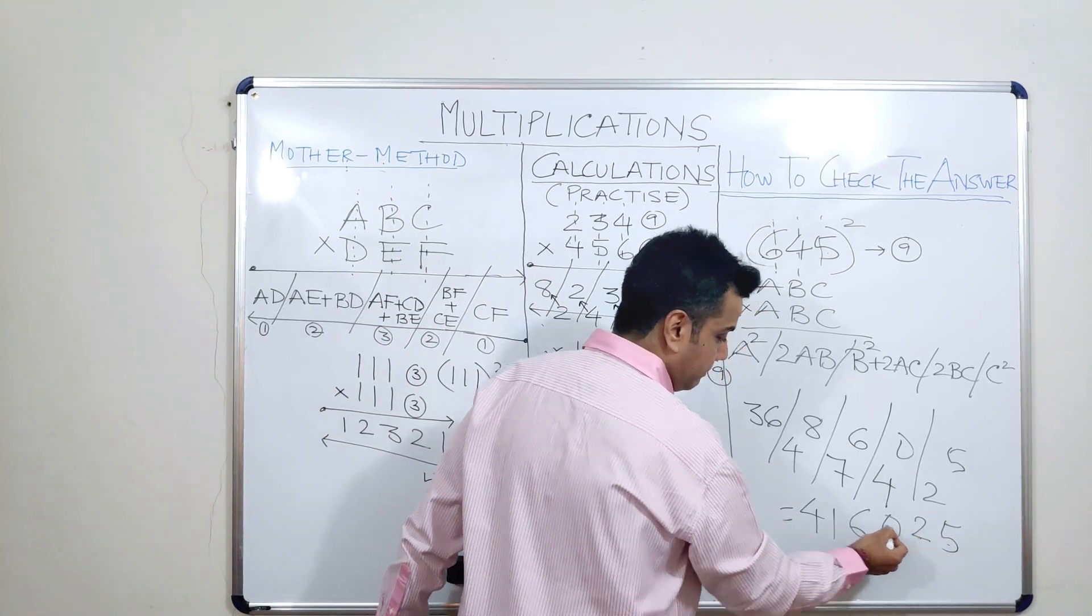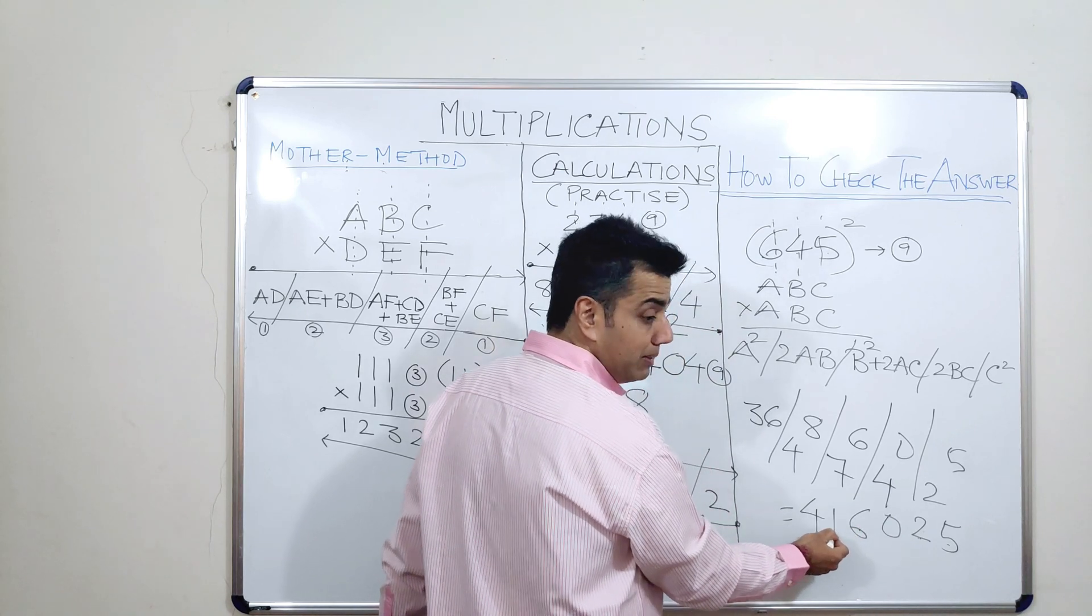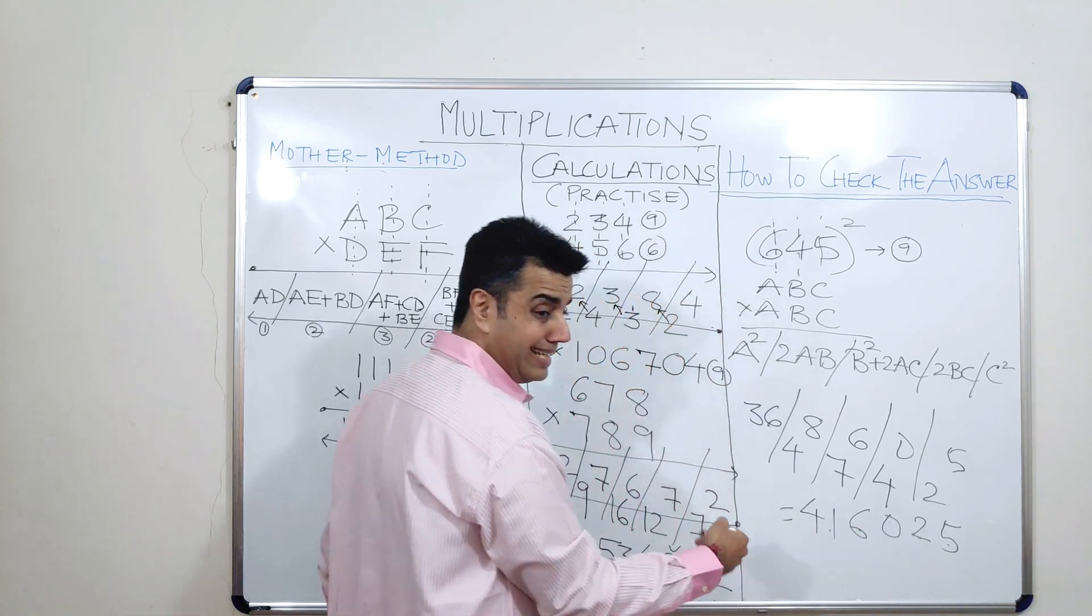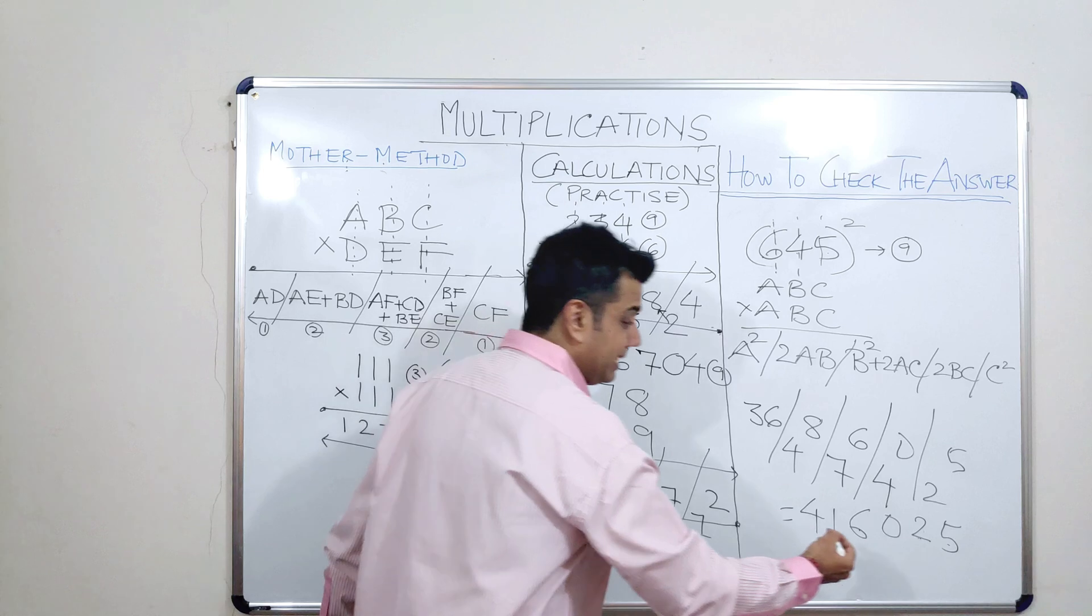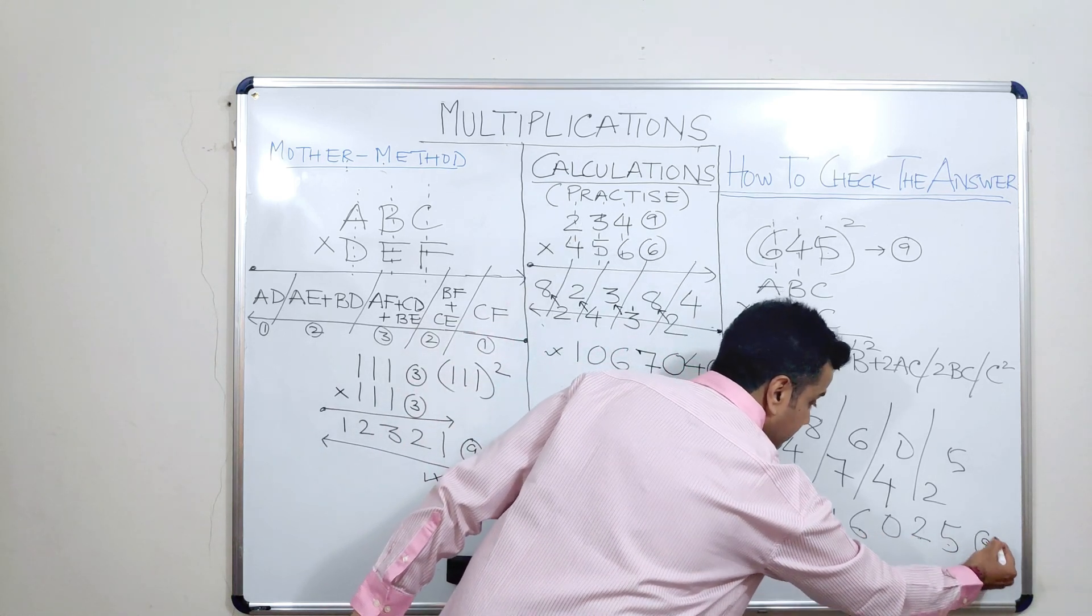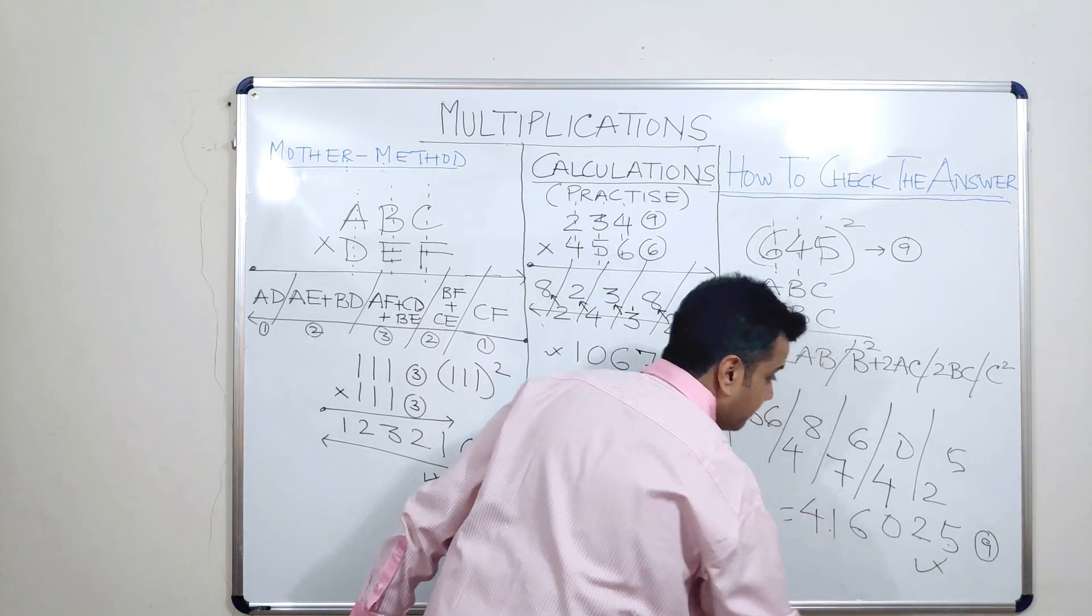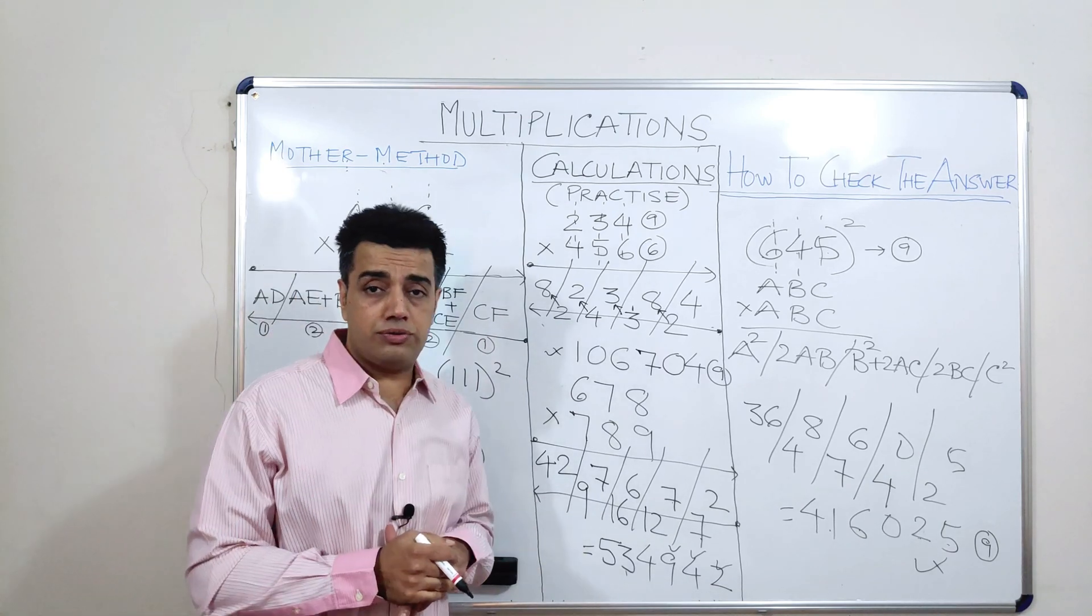Let us see whether the answer is correct or not. So, 5 plus 2 is 7. 7 plus 6 is 13. 13 plus 1 is 14. 14 plus 4 is 18. 18 means 1 plus 8 is 9. I am getting 9 here. That means this answer should be correct.